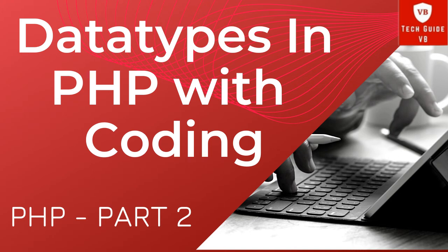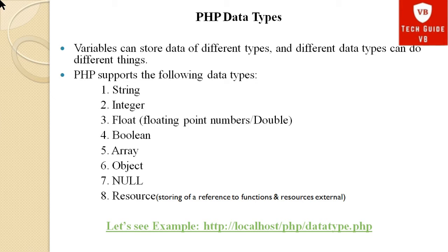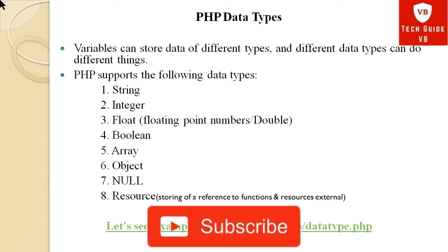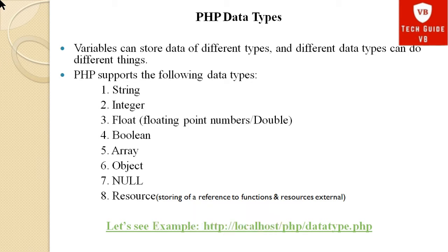We will start today's session on PHP data types. Variables can store data of different types, and different data types can do different things. Data types are a very important concept in PHP or any programming language, because they are used in any line of code. Unlike other programming languages, a PHP variable can store data of different types — if you pass a character to the variable, it becomes the string type.